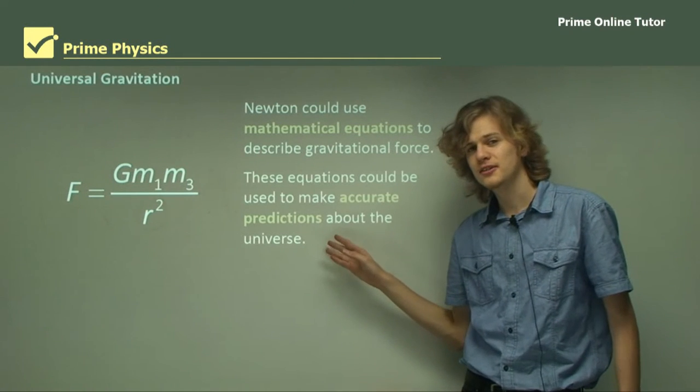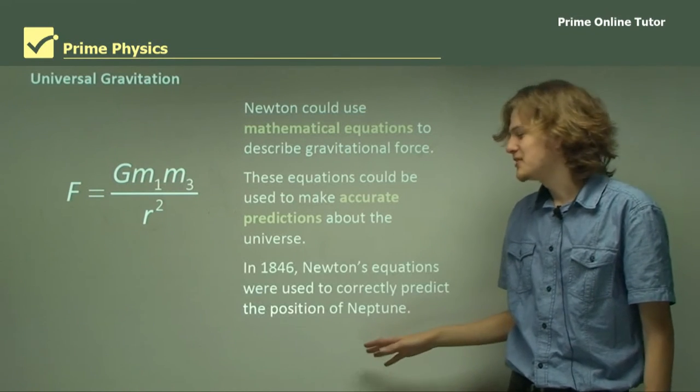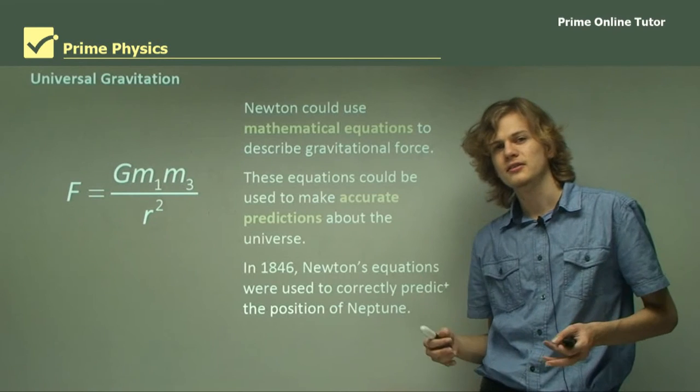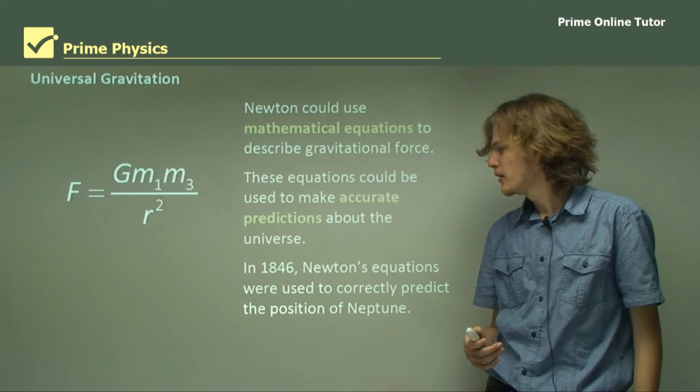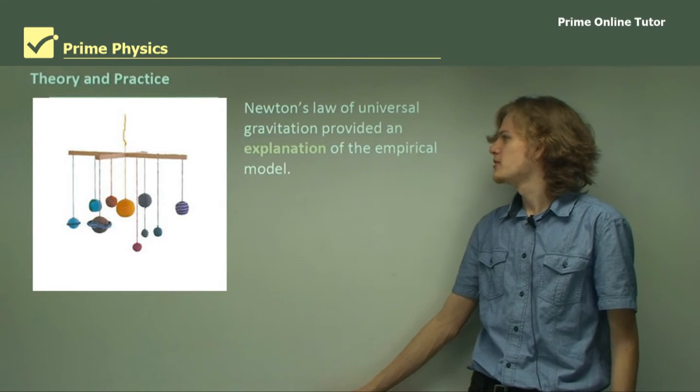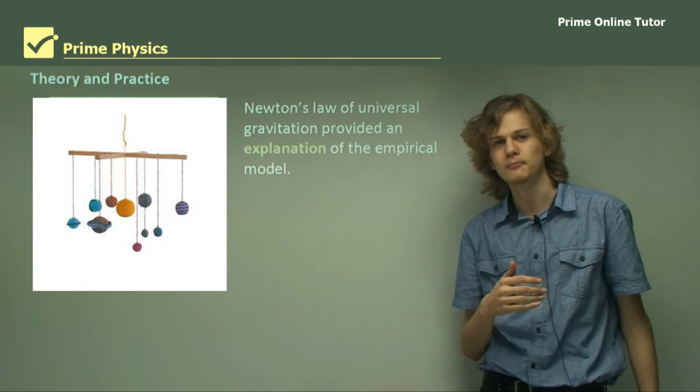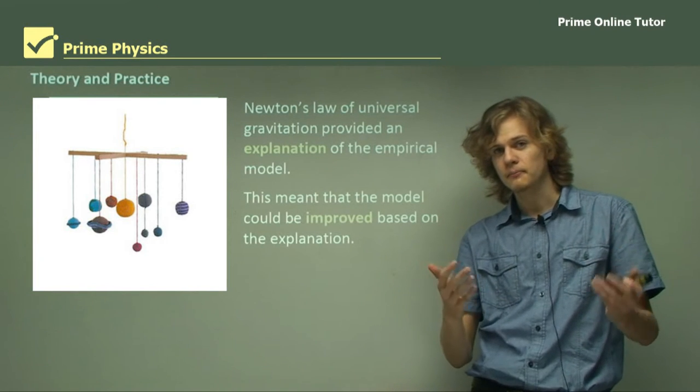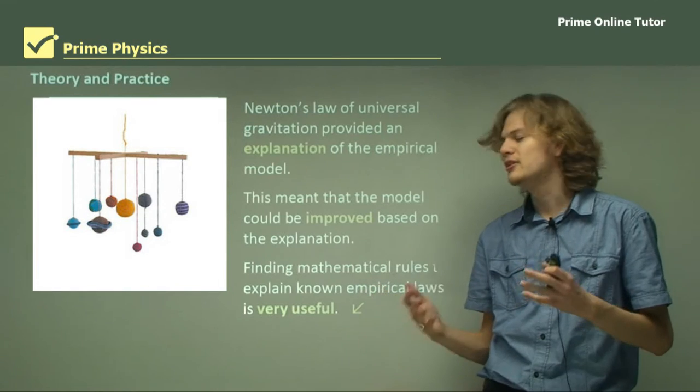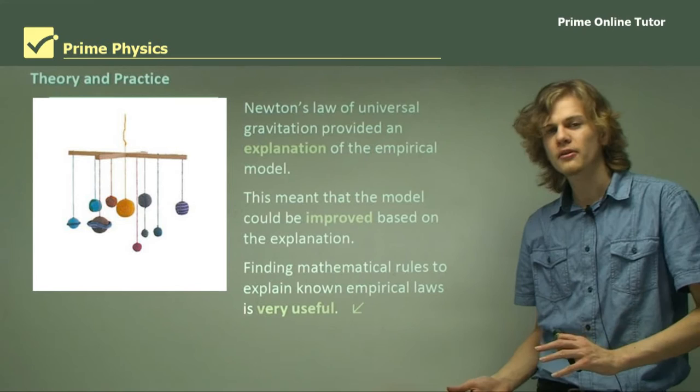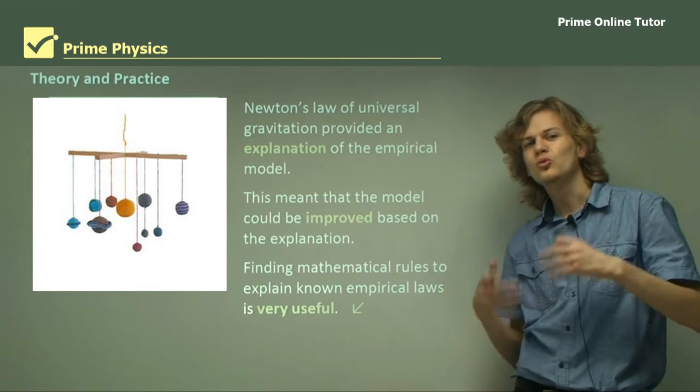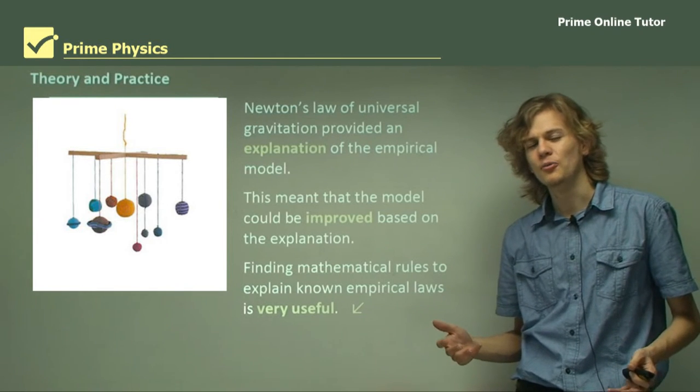These equations could be used to make accurate predictions about the universe when combined with Kepler's laws. In 1846, a hundred years later, Newton's equations were used to predict the position of Neptune based on the movements of the other planets, which they assumed were caused by the gravitational pull of Neptune further out. This is one of the greatest triumphs of Newton and Kepler's laws of the universe. Newton's law of universal gravitation provided an explanation of the empirical model that Kepler had set up. This meant that the model could be improved based on the explanation. Finding mathematical rules to explain known empirical laws is very useful. If we have an explanation for the model that we've come up with, then that lets us expand and improve upon the model.